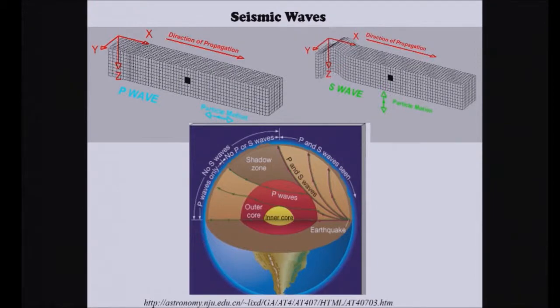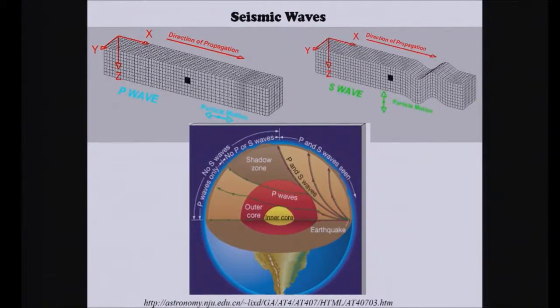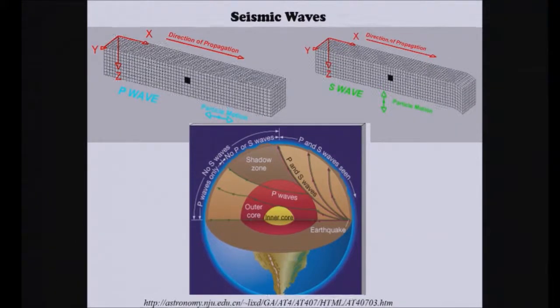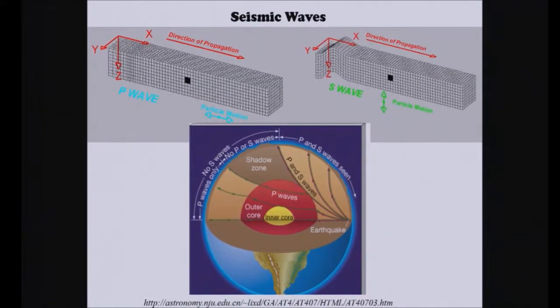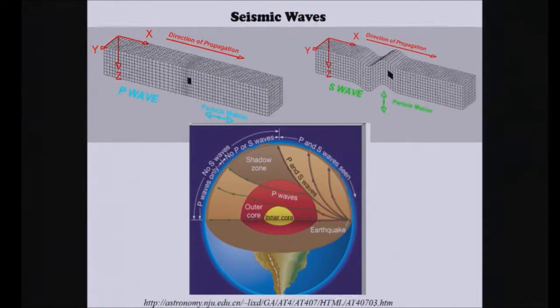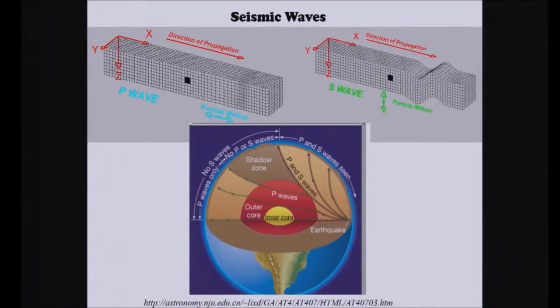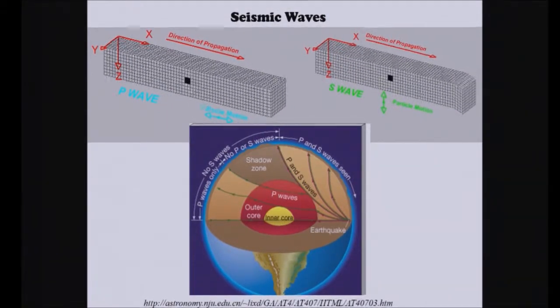Another cool thing: here is a cutout of the Earth. So if you have an earthquake over on one side of the Earth, it's going to generate waves out in all different directions, more or less. It's going to generate P waves and S waves.